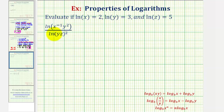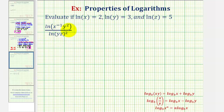We have to be careful about this because notice how we have a quotient of two logarithms, so we cannot write this as a difference of two logarithms using the quotient property of logs given here. This tells us the log of x divided by y equals log x minus log y. But we don't have the log of a quotient — we have the quotient of two logs.